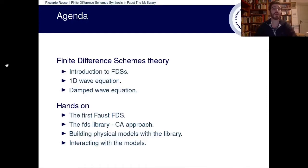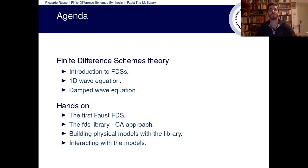This is the agenda for today. This workshop will be divided into two main parts. In the first part we'll introduce some of the FDS theory. Some of you may be already familiar with this, for others it will be completely new. This part is mainly oriented towards those who are new to FDS and is intended to give you some of the mathematical basis that will be useful throughout this tutorial. Then I will move to the hands-on section: first we will implement the first FDS model without using the library, to understand the basic principles of finite difference schemes in Faust. Then we will have a brief look at the cellular automata approach used inside the library, and later we will build all the schemes we obtained on paper by using the library. Lastly we will take a brief look at the interaction models.